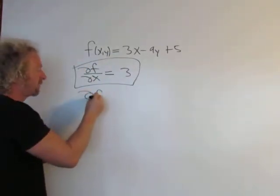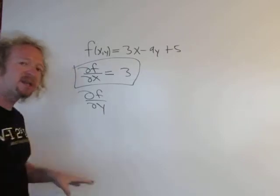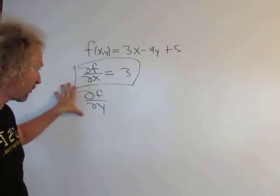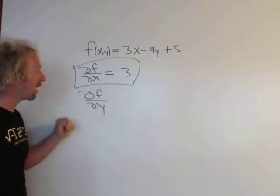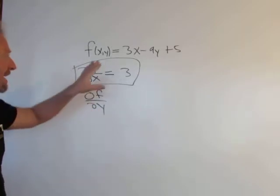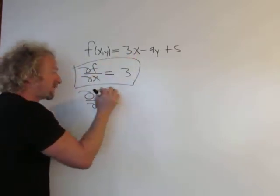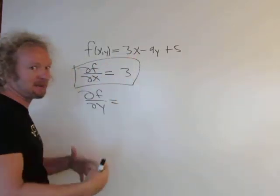For the second one, we do ∂f/∂y. In this case, we're taking the partial derivative of f with respect to y. And in this case, we treat x as constant. So we fix x and we change y, that's the idea, that's the intuition behind it.